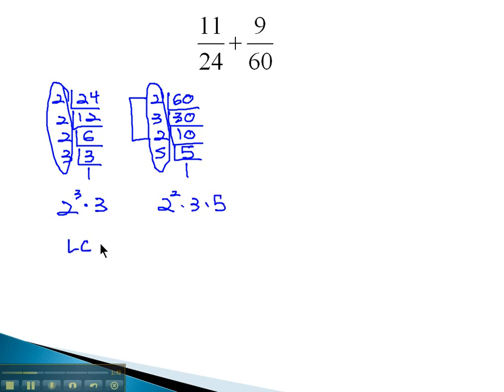And then we can identify the least common denominator or least common multiple by using all the factors with highest exponents: 2's, 3's, and 5's. The only exponents we have are on the 2's, and the highest exponent is a cubed. 2 cubed is 8 times 3 times 5. 8 times 3 is 24 times 5. 24 times 5 is 120. Our least common denominator for this problem is 120.